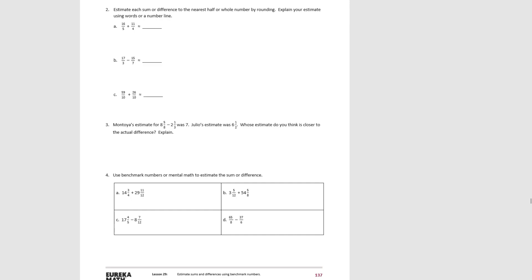Moving on to number 2. We're going to estimate the sum or difference to the half or whole by rounding and explain your estimate using words or a number line. When we have a fraction greater than 1, the easiest way is to turn it into a mixed number. So we could turn the first into 3 and 1 fifth, and the second into 2 and 3 fourths. For our estimate, 3 and 1 fifth is close to 3, and 2 and 3 fourths we could round to either 2 and 1 half or to 3 — let's do 3 — so our estimate would be 6.